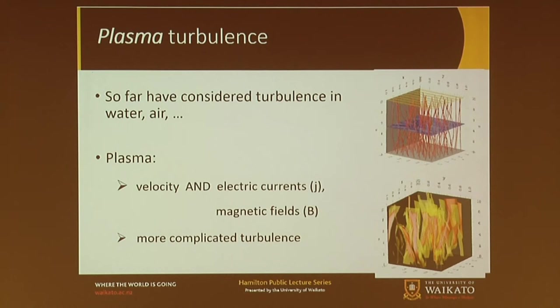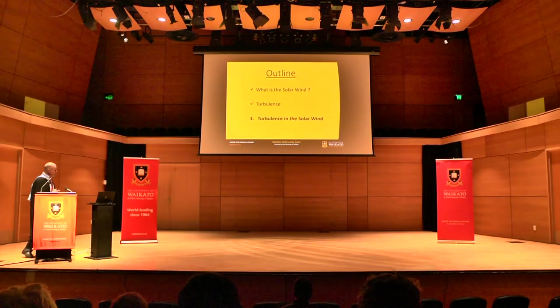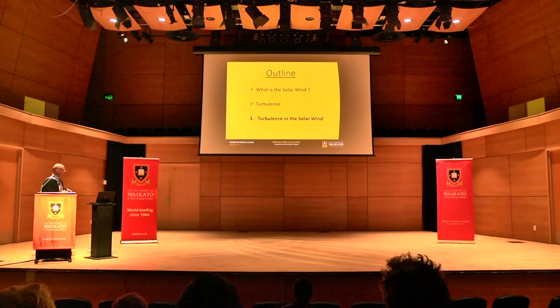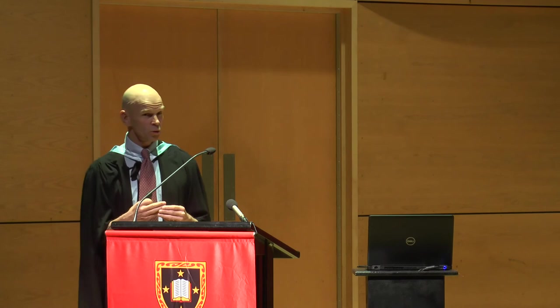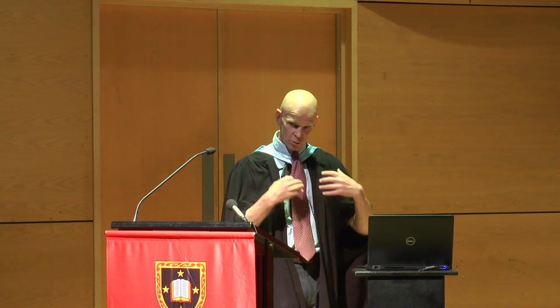Here's a picture of some magnetic field lines and electric current structures, just to show you that it is more complicated. That was the second part of the talk — the introduction to turbulence. Now we're going to plug those together and talk about turbulence in space, in the solar wind in particular. The idea is to use theoretical physics and computer simulations to take the equations that describe these things and solve them — hopefully with pencil and paper sometimes, and when we can't, using numerical methods on the computer.